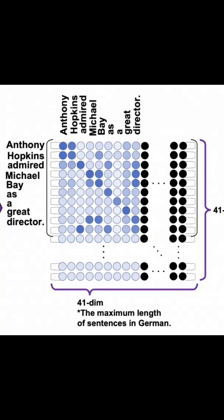2. Padding masks. When sentences are input to a transformer, they are padded to make sure they are fixed length. The padding doesn't mean anything, and so we use the padding mask to make sure no attention is paid to these padding tokens.